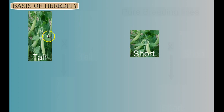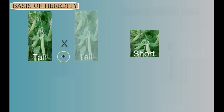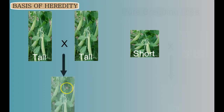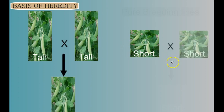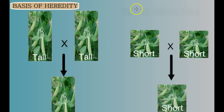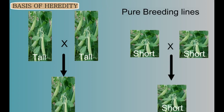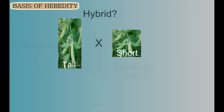If he bred one of these tall plants with another tall plant, all the offspring were tall. And if he bred one of these short plants with another short plant, all the offspring were short. He called these pure breeding lines.